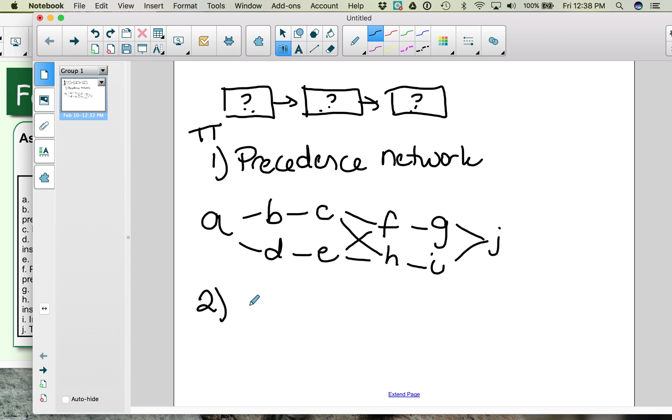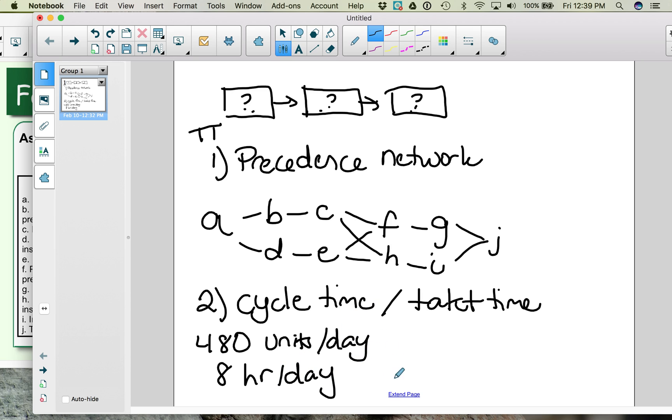The next thing we need to do is determine the cycle time. That is, how much time can a single table spend at each workstation? So our cycle time, or takt time as it's also called, can be found by looking at our demand, our forecasted demand. And let's forecast that our demand is 480 units per day. And let's also assume that our company operates 8 hours a day.